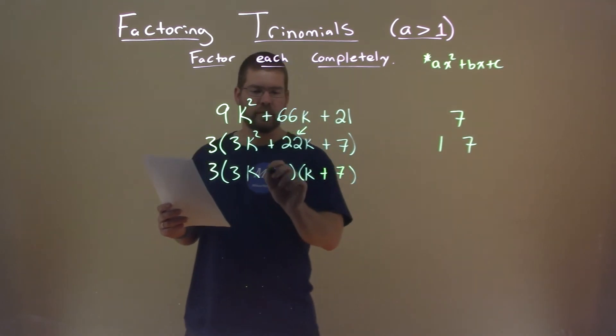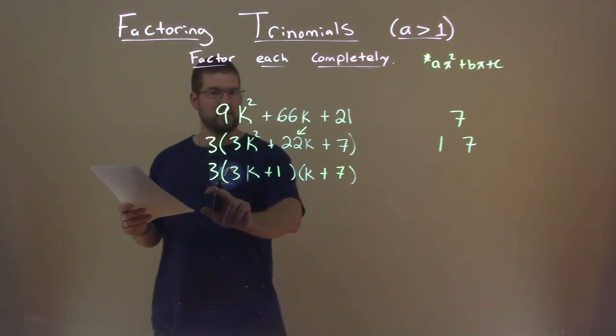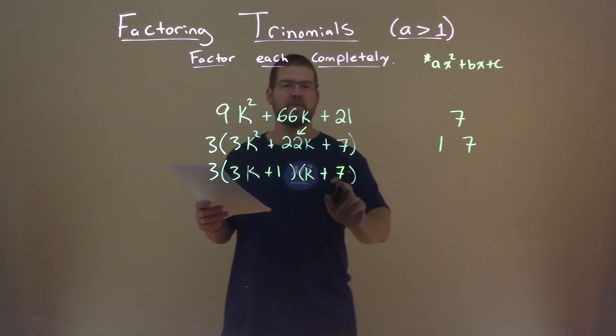Put a 7 here, plus 1 here, and now we have our final answer in the factor form, 3, don't forget that part, times 3k plus 1, times k plus 7.